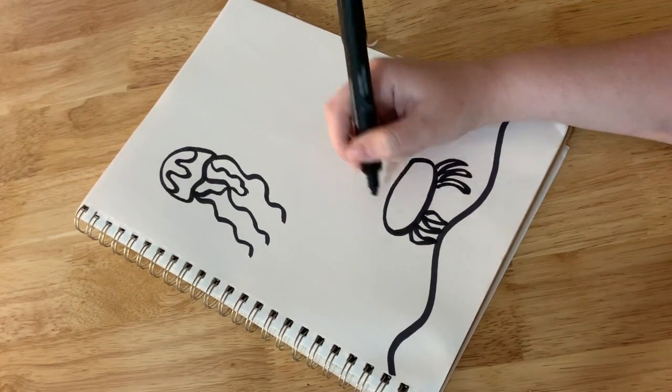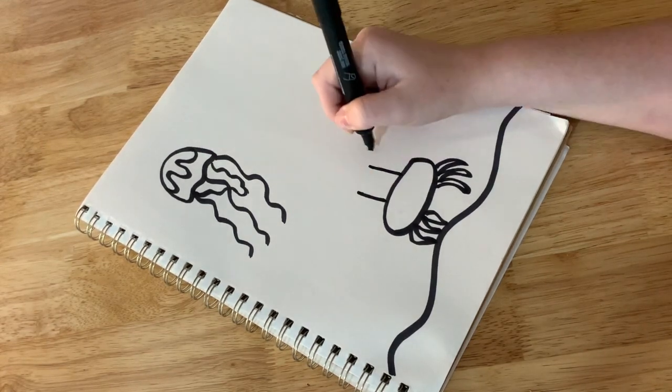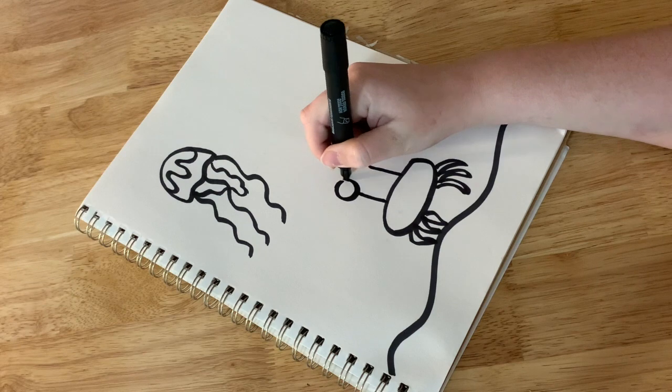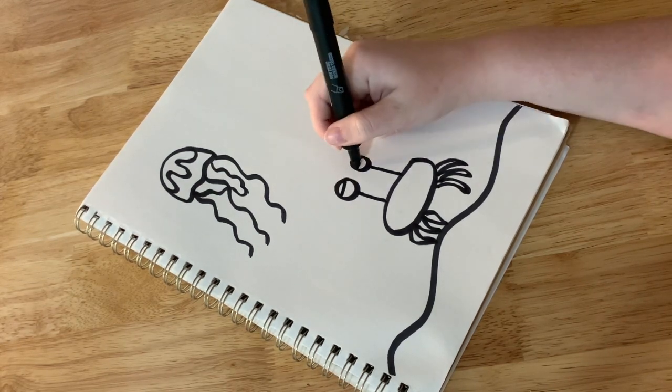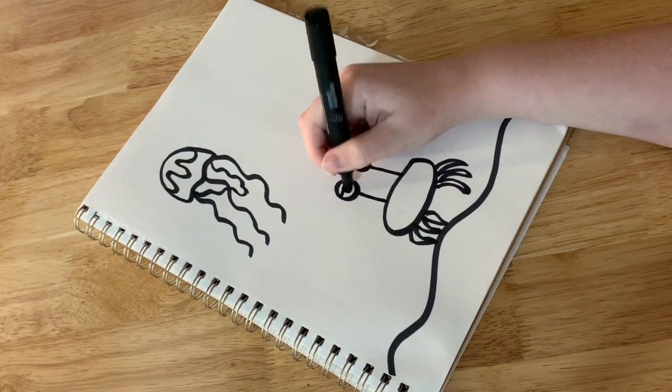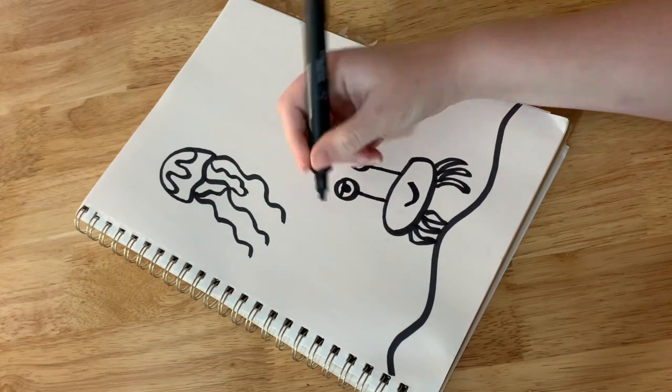Then I'm gonna give him some eyes. So I'm gonna draw two lines going up and at the top of both those lines I'm gonna draw a circle. And then give him a little eyelid and an eyeball. Then I can give him a smile.